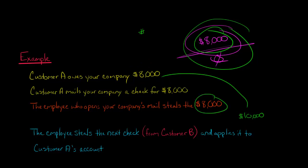So they stole the initial $8,000. Then the next customer check from customer B comes in of $10,000, and they take $8,000 of that and apply it against the balance of customer A. So from your company's accounting records now, customer A's balance is zero.